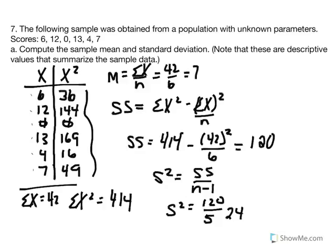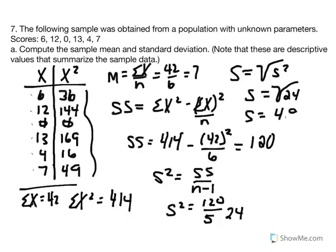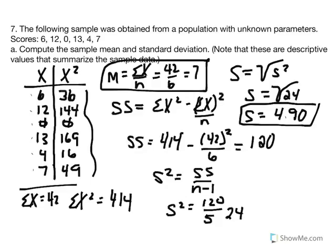Standard deviation equals the square root of variance. So standard deviation equals the square root of 24, which rounds to 4.90. We've calculated the mean of 7 and standard deviation of 4.90 for this distribution. We'll use the standard deviation to calculate the estimated standard error of the mean in the next part.